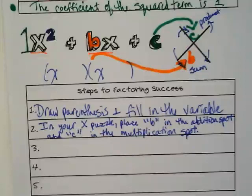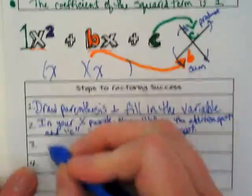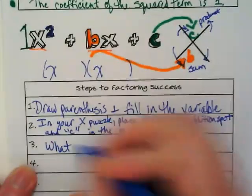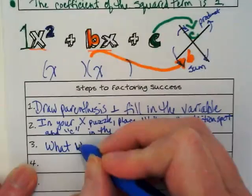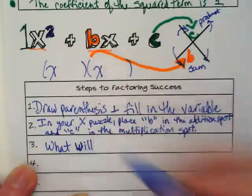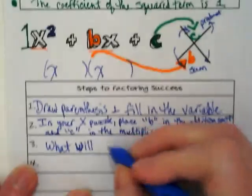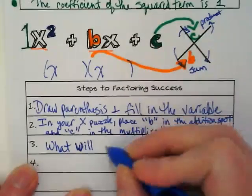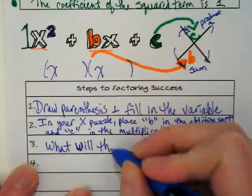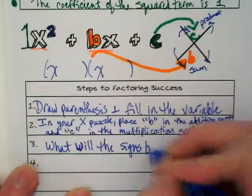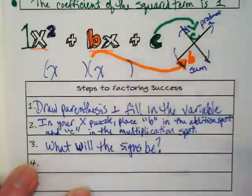Step three. It's a question: what will the signs be? And believe it or not, those silly lyrics we just looked at will help you begin to see the pattern of what the sign will be, as well as the X puzzle. The X puzzle will help you figure it out too. What will the signs be? And there's three possibilities.